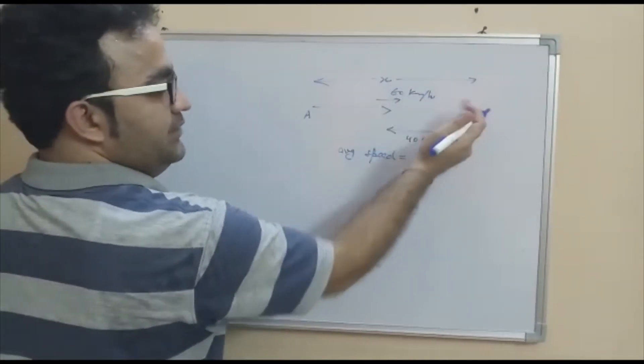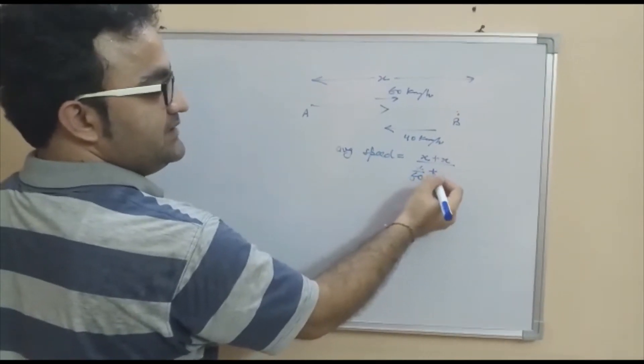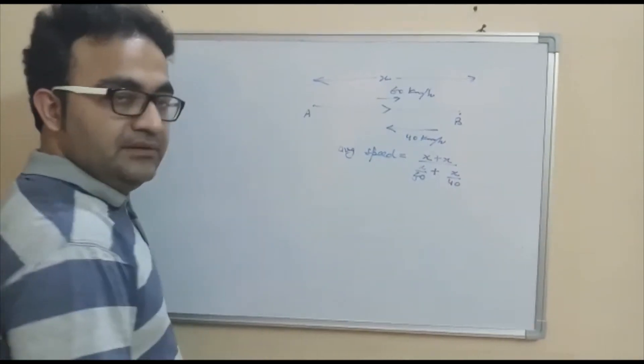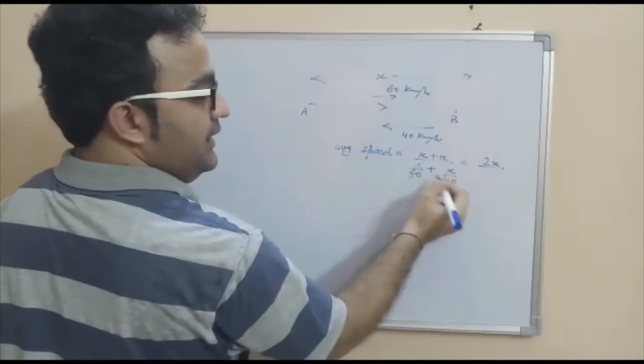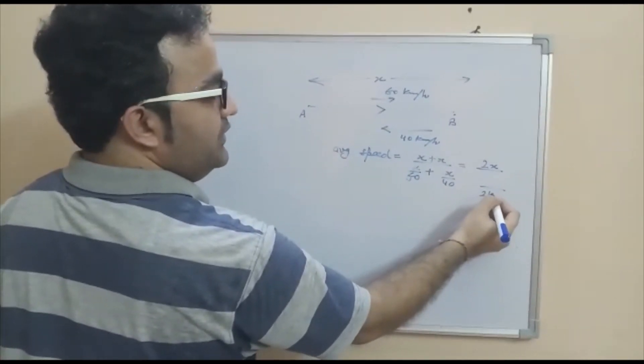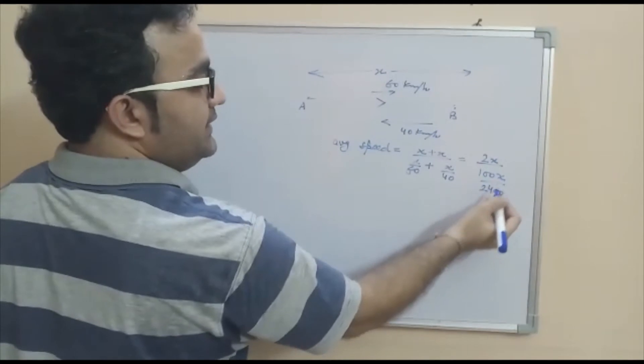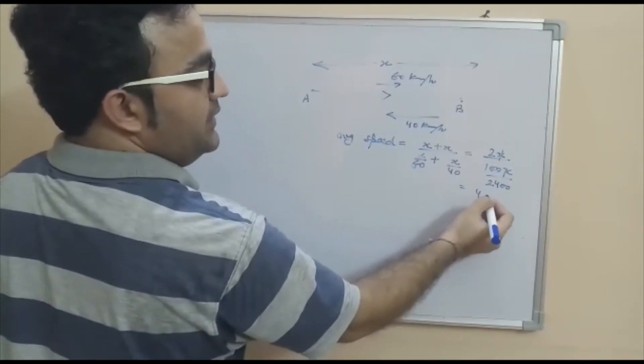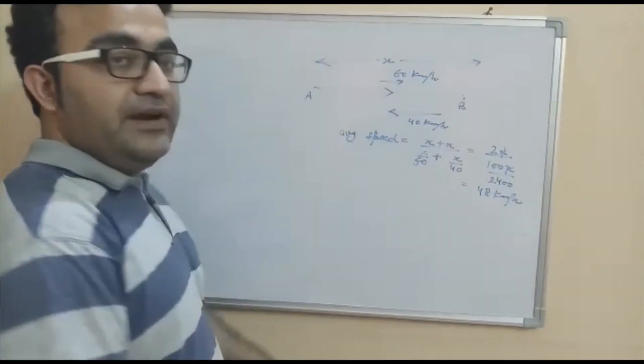The time from A to B is the distance upon speed, plus from B to A is the distance upon speed. Right? So that here you get 2x. And here if you simplify it, you get 2400. I am just doing it directly. So that you get 100x. Now these two zeros get cancelled. And here you get 48 km per hour. So this is how we find the average speed.